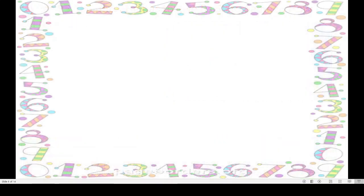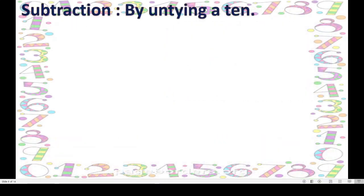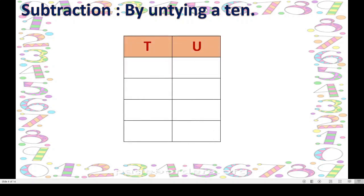We will go to the next sum: Subtraction by untying a 10 — same method. We will go through it. This is our table. You know how to do the subtraction. Your numbers are there. Minus 58 — that is 5 tens, 8 units. Minus 39 — that is 3 tens, 9 units. Always we begin subtraction from the unit place.